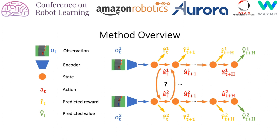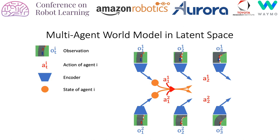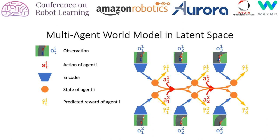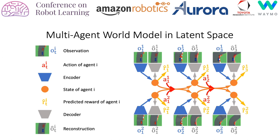One of the challenges is to model the interactions between the agents. In our agent, the world model is learned from rollouts stored in a dataset of past experiences. The latent embedding is learned by training the agent to reconstruct its own observations and predict its rewards from the latent state.